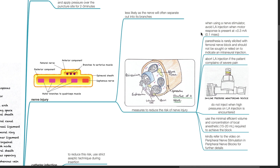Nerve injury. This is less likely as the nerve will often separate out into its branches. Measures to reduce the risk of nerve injury include: when using a nerve stimulator, avoid LA injection when motor response is present at less than 0.3 mA, 0.1 ms. Paresthesia is rarely elicited with femoral nerve block and should not be sought or relied on to indicate an intraneural injection. Abort LA injection if the patient complains of severe pain. Do not inject when high pressures on LA injection are encountered. Use the minimal efficient volume and concentration of LA required to achieve the block, typically 15-20 mL.